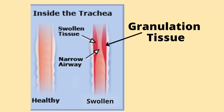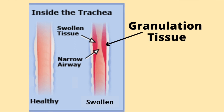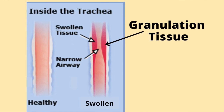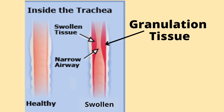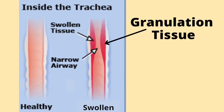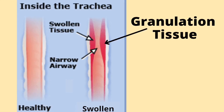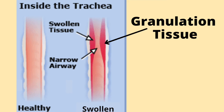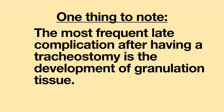Sometimes, granulation tissue forms inside the body and may cause narrowing. For example, if the trachea is injured or irritated, the body can start to produce granulation tissue in an attempt to repair the injury. If it overgrows, this opening can narrow, causing difficulties with breathing. The most frequent late complication after having a tracheostomy is the development of granulation tissue. If you notice tracheostomy tube exchanges are extremely difficult, or if the tracheostomy tube exchange causes a lot of blood, ask your medical provider if you may have granulation tissue.